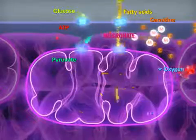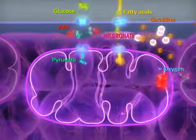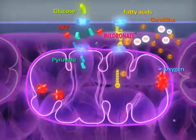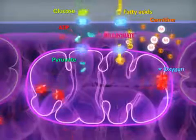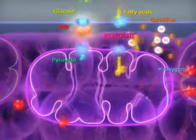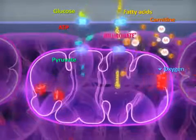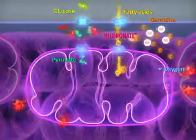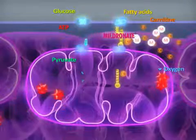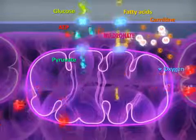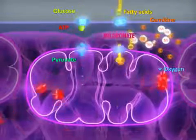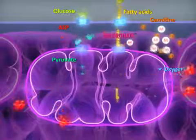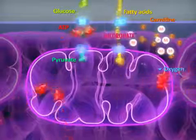As a metabolism corrector, Mildronate switches energy metabolism to an alternate source of energy from glucose, allowing the cell to utilize less oxygen and improve energy production under ischemic conditions. In addition, it reduces damage to cell walls and renews ATP flow from mitochondria to the cytosol.